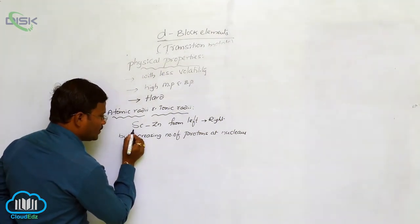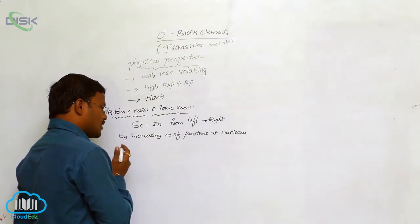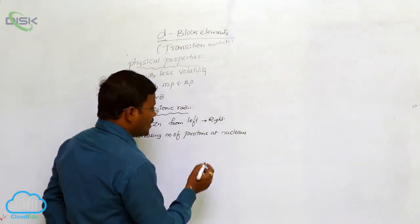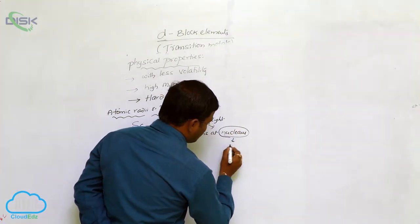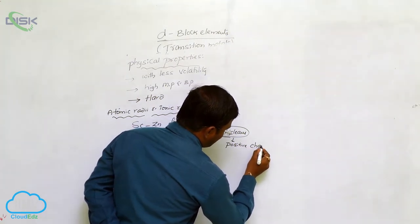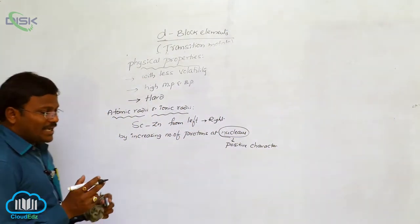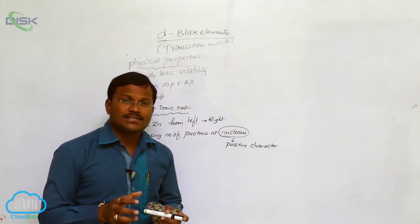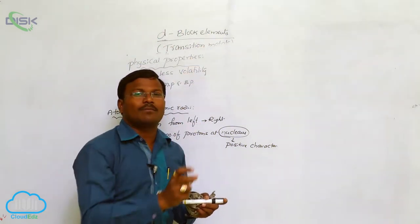Scandium has atomic number 21 while zinc has atomic number 30. Moving from left to right in the periodic table, the number of protons increases, meaning the positive character of the nucleus increases. As the positive character of the nucleus increases, the attraction of the nucleus onto the valency orbit also increases.